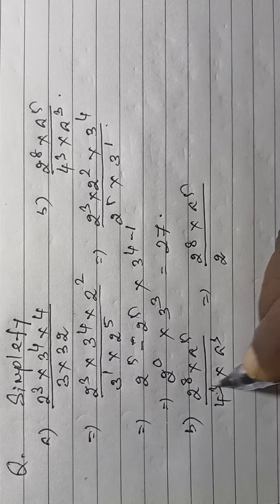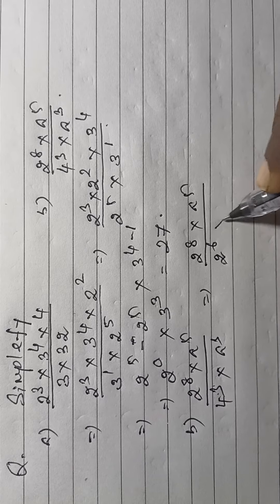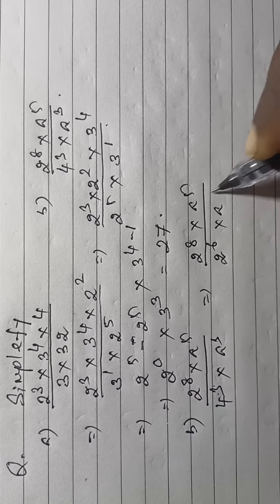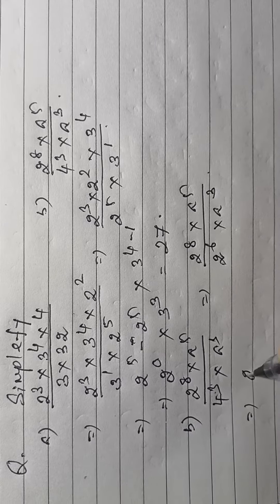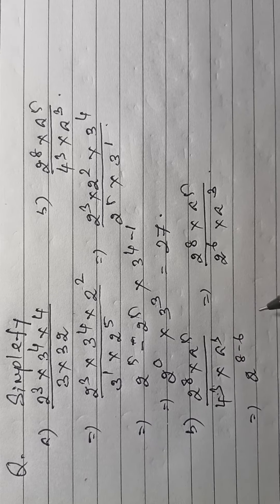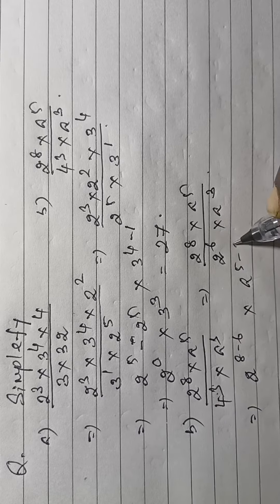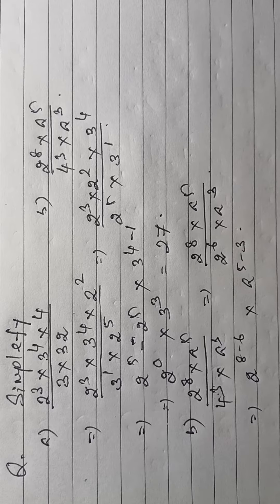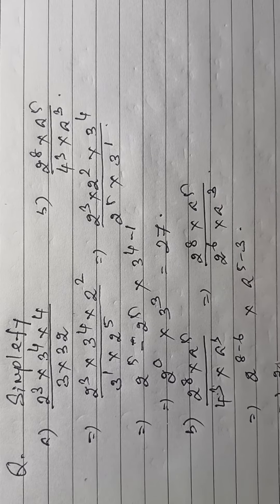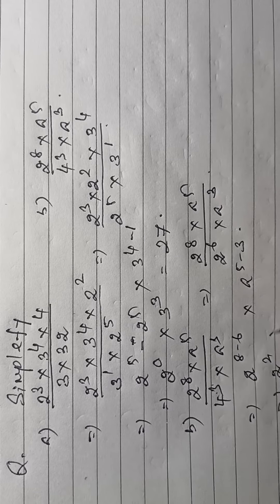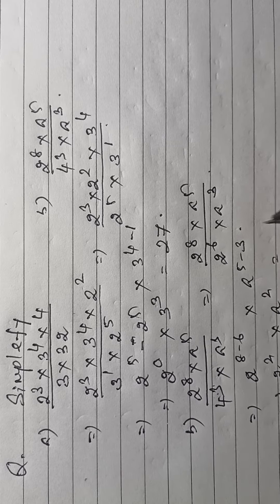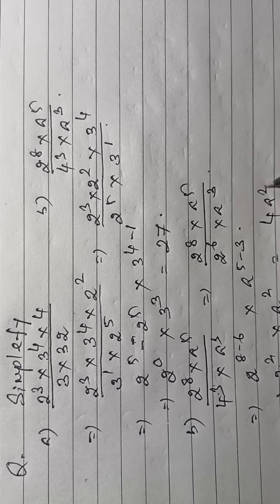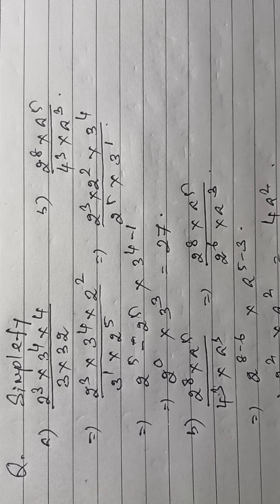So now: 2 to the power 8, into a to the power 5, divided by 2 to the power (2×3), that is 2 to the power 6, into a to the power 3. Then 2 to the power (8−6), into a to the power (5−3), that is 2 to the power 2, into a to the power 2. So 4a squared is the answer.